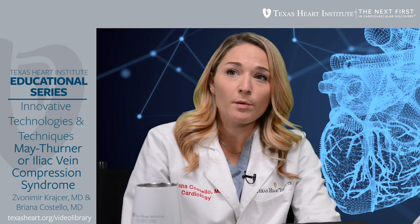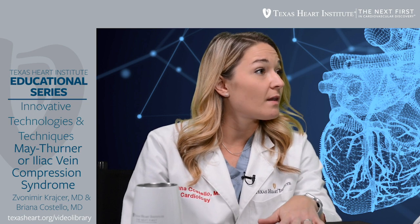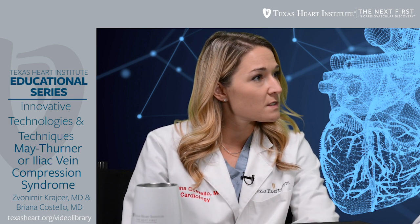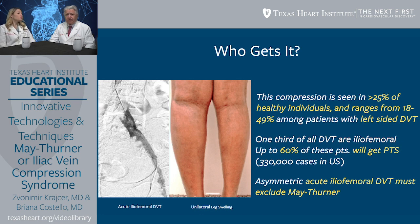In women who are pregnant, do symptoms usually arise during pregnancy or after? Do they have significant left lower extremity edema out of proportion to the right? This compression occurs in more than 25 percent of healthy individuals, more common in females, which has to do with anatomy. There is a much steeper angle between the lumbar spine and pelvis in the female population, and pregnancy adds additional compression on top of that from the right common iliac artery on the left iliac vein.